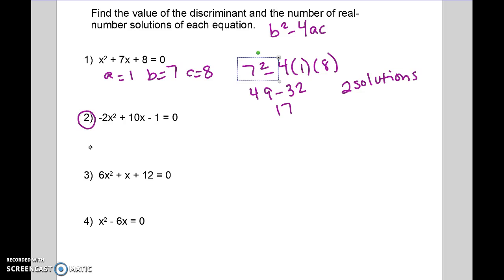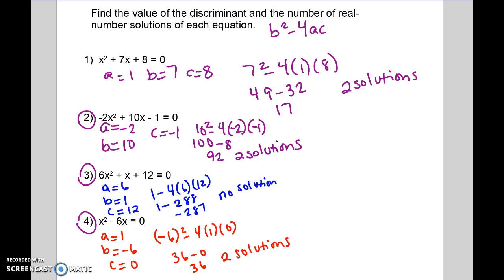Go ahead and try the next three. So here are your answers. You see the first one has two solutions. The next one has no solution because it was a negative number. And the last one has two solutions.